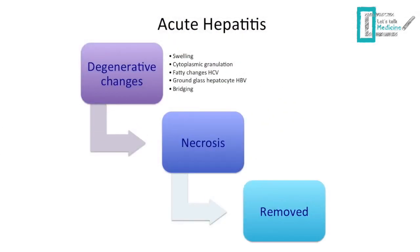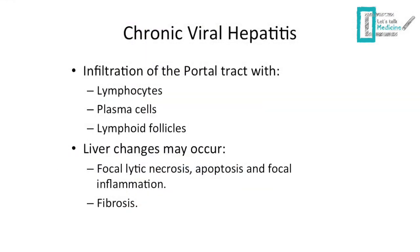Here we have the course of the disease in acute hepatitis. First, it starts with degenerative changes, basically because of the immune response against the hepatocytes. Then we will have necrosis of the cell, and eventually the cell will be removed by the immune system. For chronic viral hepatitis, there will usually be infiltration in the portal tract with lymphocytes and plasma cells, and liver changes like necrosis, apoptosis, and fibrosis.